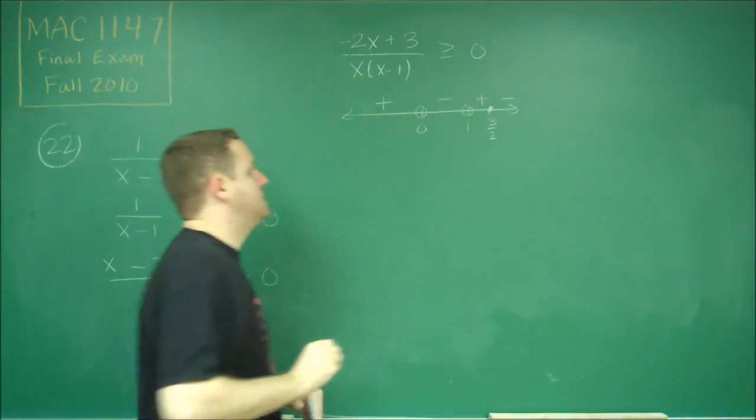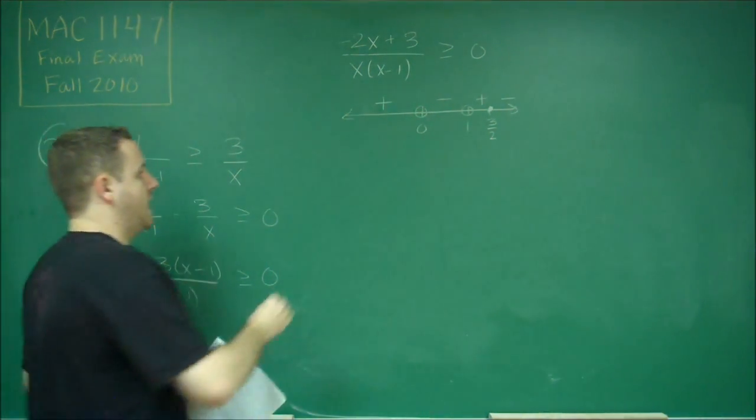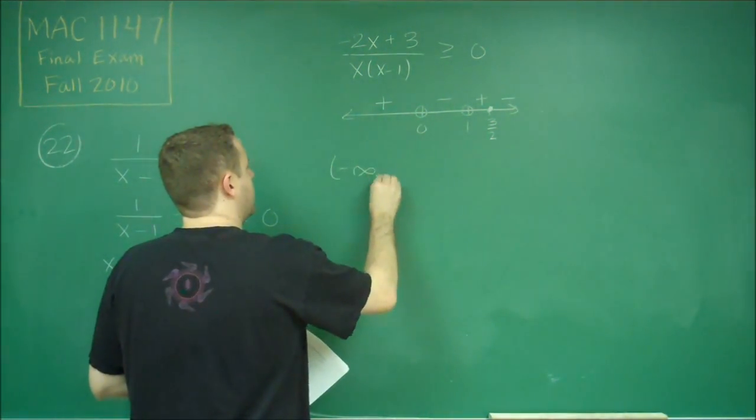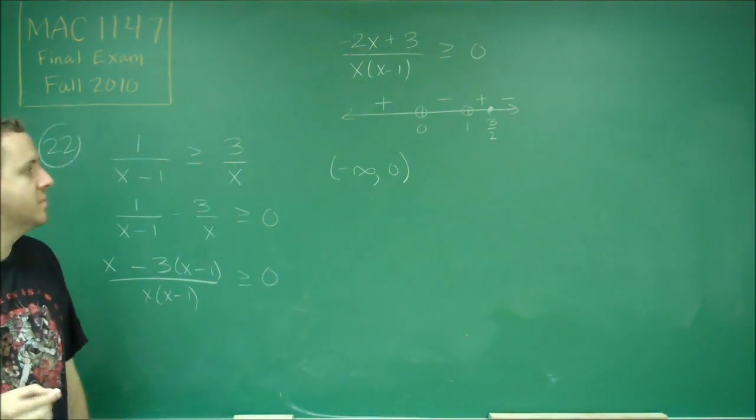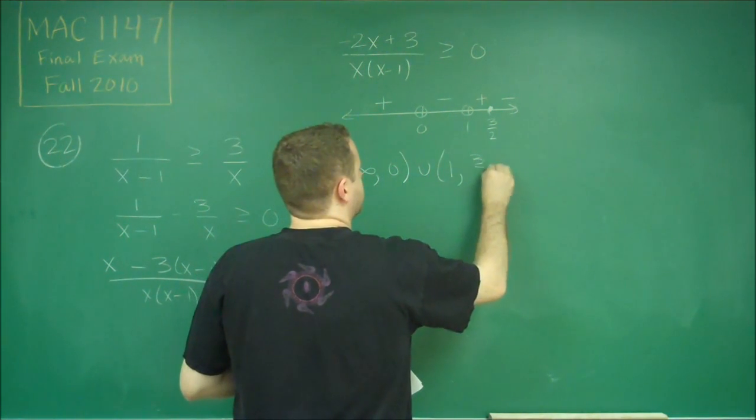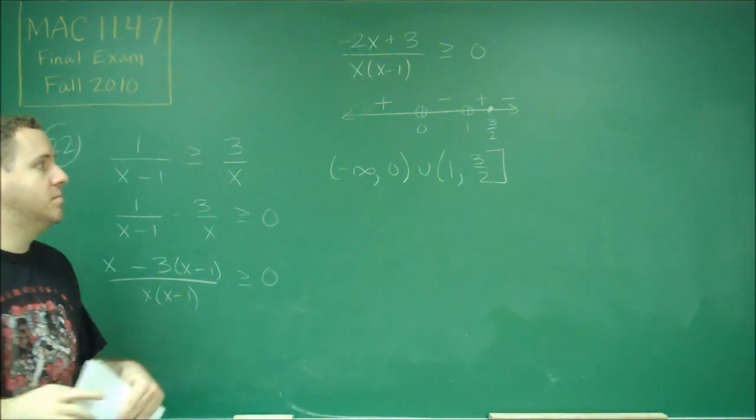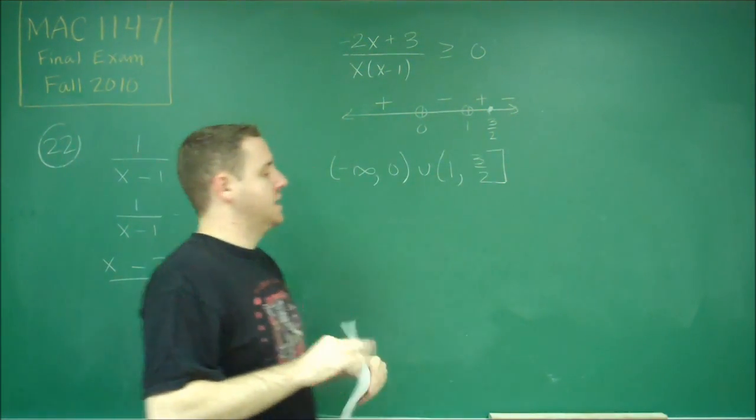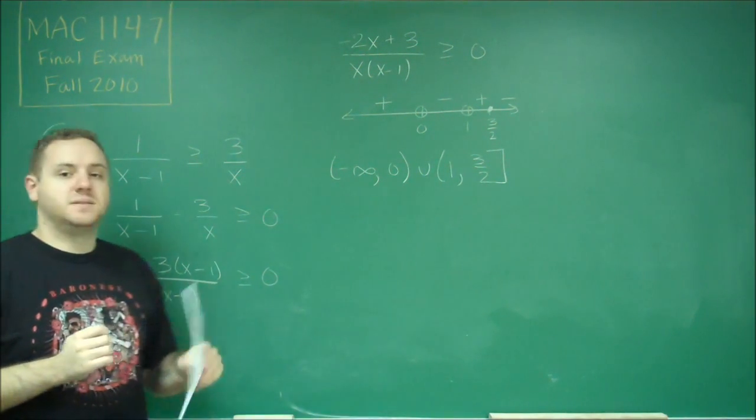Now we just need to write our intervals that are positive and include those endpoints accordingly. So we have negative infinity up to 0 with a parenthesis because we can't have 0, and we have from 1 to 3 halves with a bracket on 3 halves because that one was a closed circle. So that gives us answer choice C.